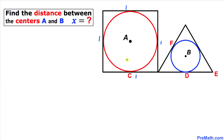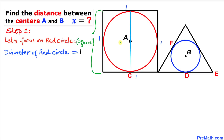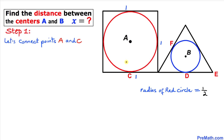Let's get started with the solution. Focusing on the square with the red circle inscribed in it, we know the side length is 1 unit. By definition, the diameter of the inscribed circle equals 1, so the radius of this circle is half of that — it equals 1 over 2.